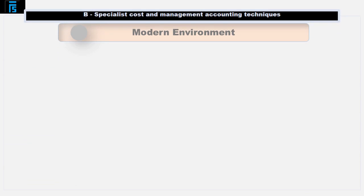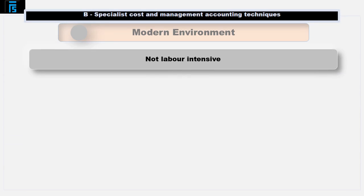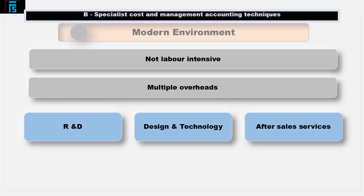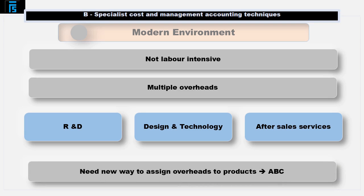In the modern environment, activity based costing recognises that overheads are no longer driven by manufacturing activities only or the number of units produced. Overheads are incurred as a result of product research and development, design, technology, and after sales service — all of which focus on improving the quality of the product. Different products consume these company resources in different ways, thus incurring overheads at a different rate. So, activity based costing looks for a new way to trace overheads to products — in other words, a new way to absorb.